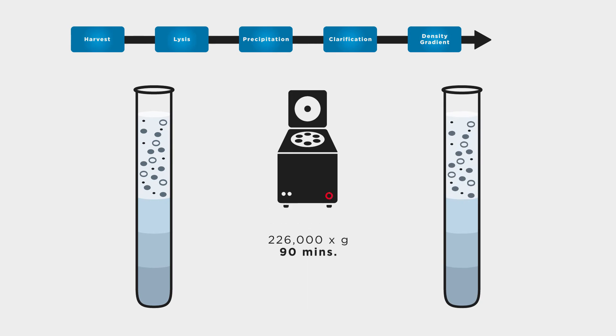Typically, it begins with a step gradient centrifugation using either sucrose, iodixanol, or cesium chloride to separate viral particles based on migration rate.